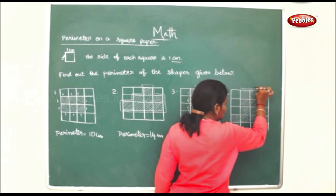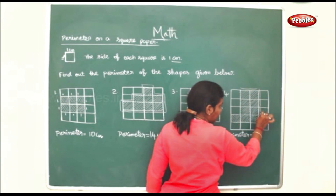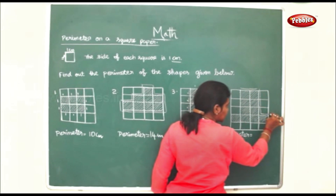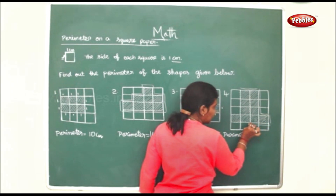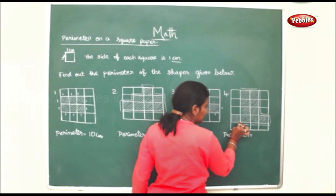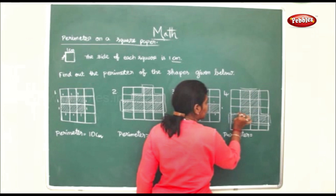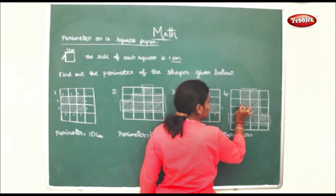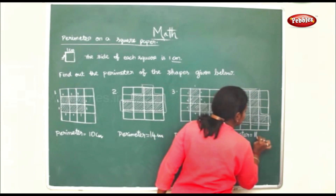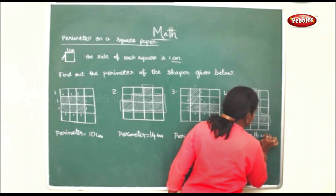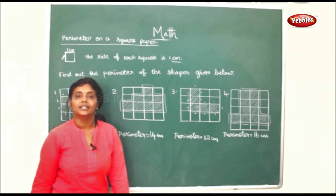In the same way, to find the perimeter of this shape, counting each unit side: 1, 2, 3, 4, 5, 6, 7, 8, 9, 10, 11, 12, 13, 14, 15, 16. The perimeter is 16 cm. Each unit side represents 1 cm.